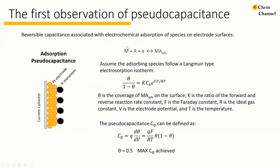If we write the process as a formula, it is the electrosorption of a cation A onto the surface of a conductive substrate M to form adsorbed MA. Assuming the adsorbed species follow a Langmuir-type electrosorption isotherm, we define theta as the coverage of adsorbed MA on the surface, and 1-theta as the surface not covered by species A. The relationship between theta and 1-theta can be expressed by this formula. Assuming the charge required to complete a monolayer coverage of A adsorption is q, then the pseudocapacitance C_phi equals dq/dV, establishing the relationship with theta.